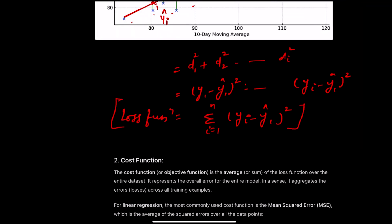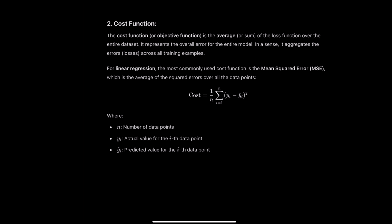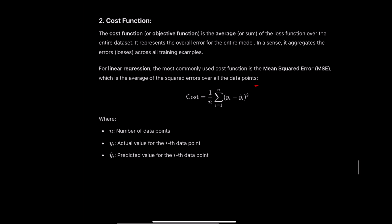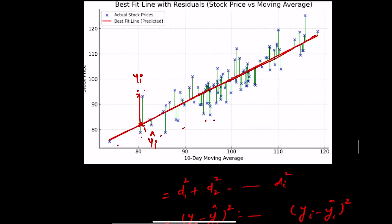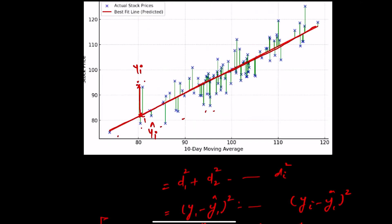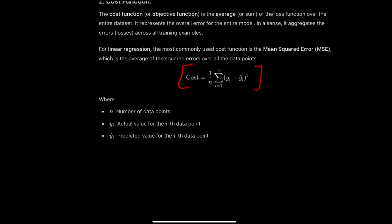When we talk about the cost function, we divide the loss by 1/n. The cost function is the average of the loss function over the entire dataset — it represents the overall error for the entire model, aggregating errors across all training examples. It is the average squared distance between actual and predicted values.